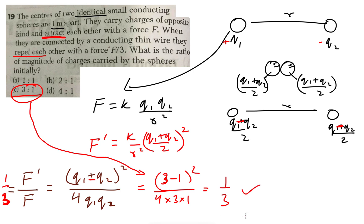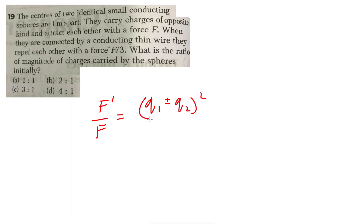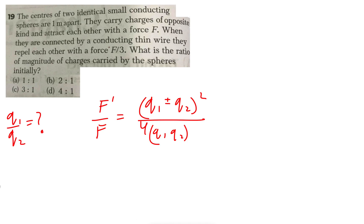So this is what you do. I'm sharing this because yesterday we actually worked it out and then put in the options. If you have to plug in options, do it in the first go itself. If it were a numerical type question — which doesn't happen in JEE/NEET — you'd need to work it out fully. But for MCQ, note that F'/F = (q1 ± q2)² / (4·q1·q2), and they've asked for q1/q2.